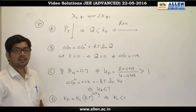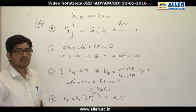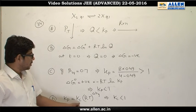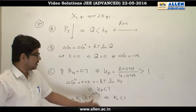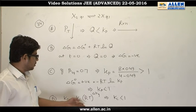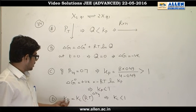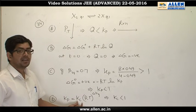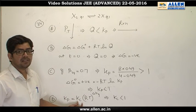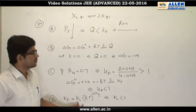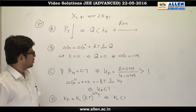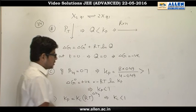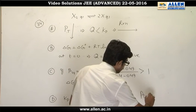Option D: Kc < 1. Using Kp = Kc(RT)^(delta_ng), since Kp < 1 (as established), substituting values shows Kc is also less than 1 in the calculation. The question asks for the incorrect option, which is C. So the answer to question 34 is C.